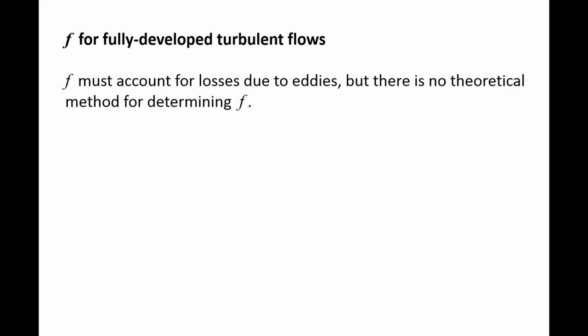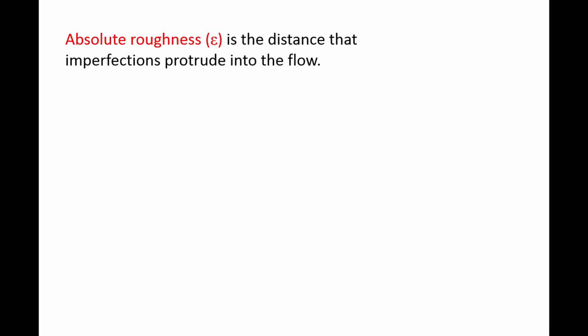So researchers have conducted many experiments and have obtained empirical formulas for f. They found the friction factor is a function of two-dimensional variables, the Reynolds number and the relative roughness, which is denoted by the absolute roughness epsilon over pipe diameter d. The absolute roughness of a pipe is the distance that imperfections at the pipe wall protrude into the flow. Typical values for the absolute roughness of new pipes of different materials is available in many sources, including fluid mechanics textbooks.